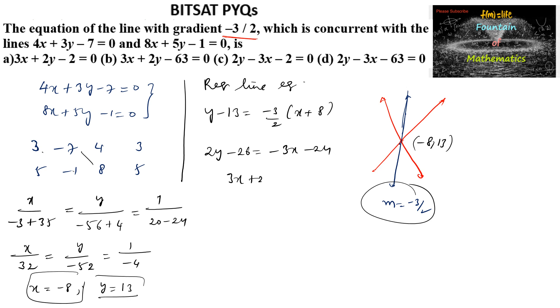That is 3x plus 2y minus 26 plus 24 is equal to 0. Or we can say 3x plus 2y minus 2 is equal to 0 which is our option a. Option a is the answer.